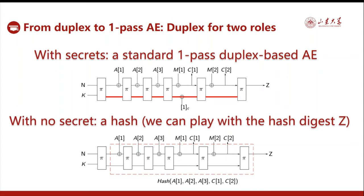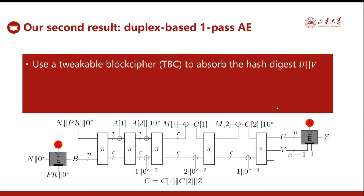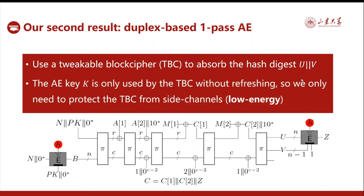We could play with the hash digest. With these observations, we come up with such a design. We use a tweakable block cipher to absorb the hash digest UV. The AE key is only used by the tweakable block cipher, so we only need to mask the tweakable block cipher. The others can just be left there. This could greatly reduce the energy consumption of the implementation.